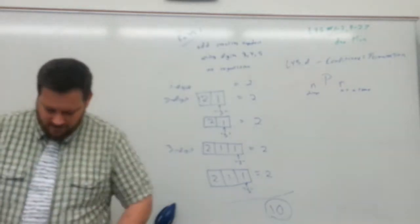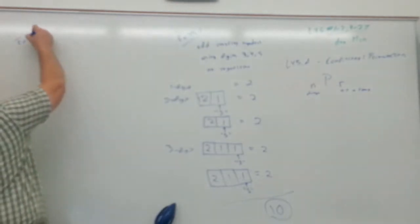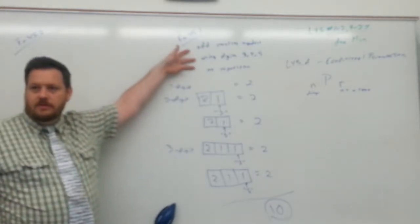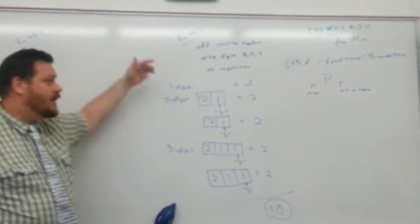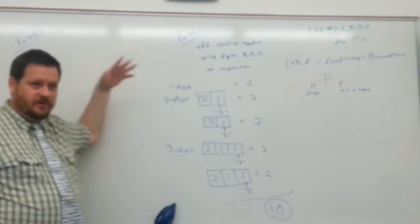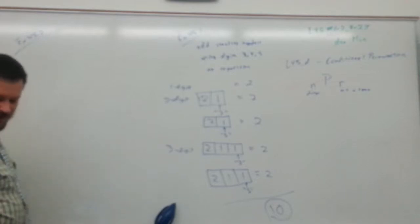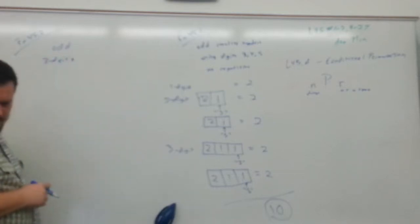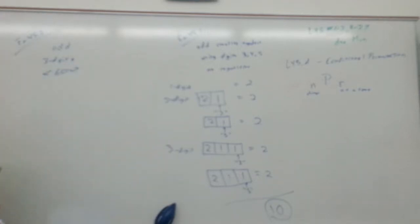There really isn't a formula for these — you just have to think it through. It's helpful to write down your criteria in your work so that you or someone reviewing your paper can follow your reasoning. So for 45.2, find the number of odd three-digit counting numbers that are less than 600. It doesn't say anything about not repeating digits, so all digits are fair game, but it must be three digits long.